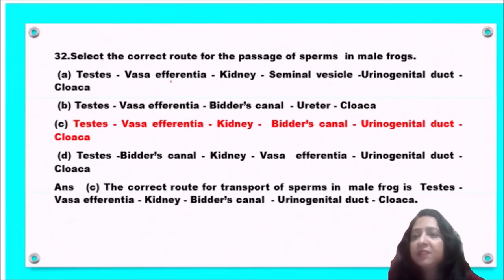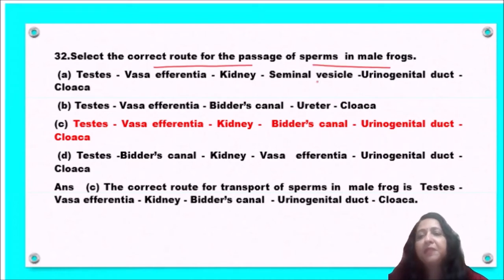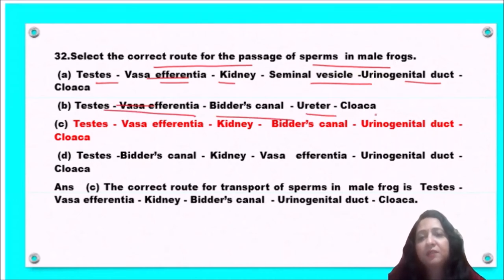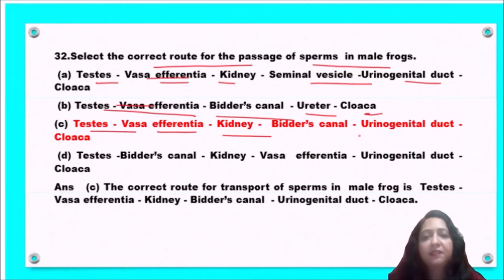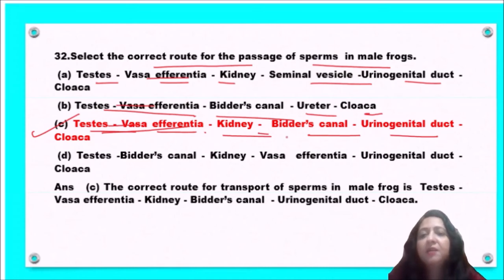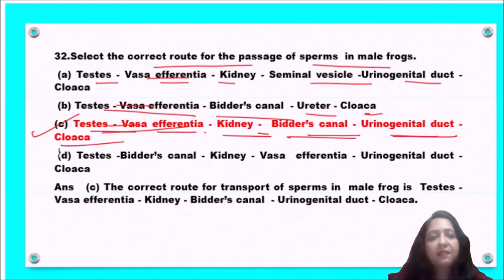Next question: select the correct route for passage of sperms in male frog. Options include: testes to vas deferens, kidney, seminal vesicle, urogenital tract, cloaca; or testes to vas deferens, bidder's canal, ureter, cloaca; or testes to vas deferens, kidney, bidder's canal, urogenital tract, cloaca. The correct route is from testes to vas deferens, kidney, bidder's canal, urogenital tract, and cloaca. So option C is the correct answer.